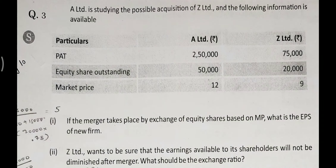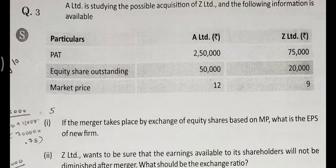The particulars given: profit after tax for A Limited is $250,000 and for Z Limited is $75,000. Equity shares outstanding: A Limited has 50,000 shares and Z Limited has 20,000 shares.